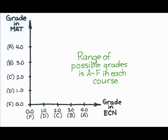What's the possible range of grades? Anywhere from an F to an A, or, since we're counting on this graph, anywhere from 0.0 to 4.0. This is true for the grade in economics axis, as well as the grade in math axis.